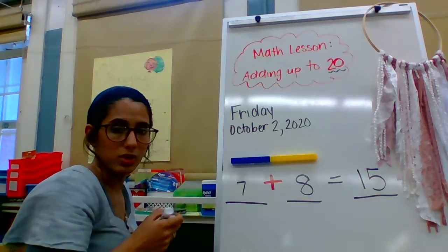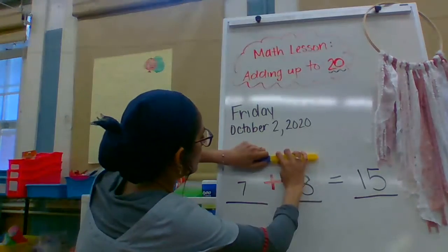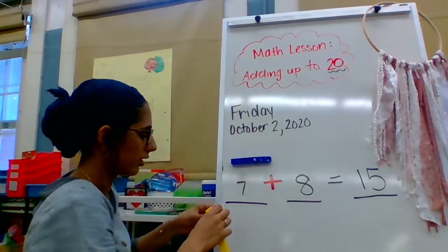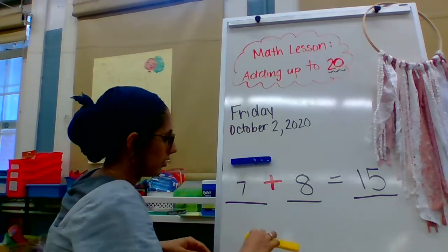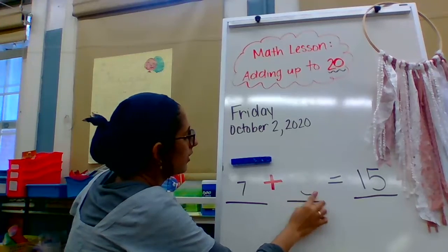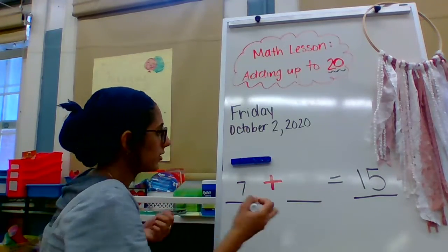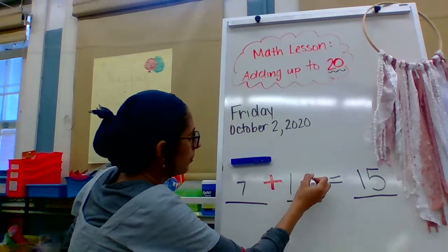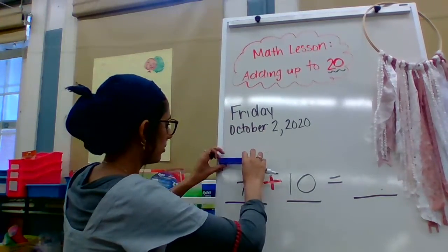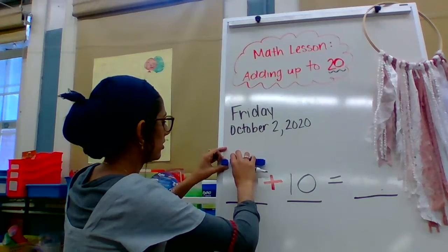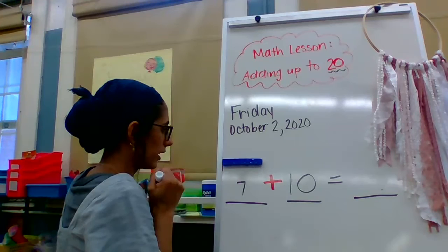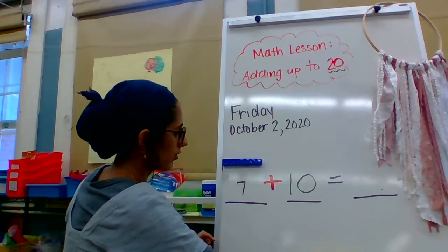All right, let's do another example. So let's say I'm going to leave my seven over here. Okay, I'm going to keep that seven and let's make this a 10. Wow, we're getting big numbers here. All right, so seven, I'm going to move you down here. All right, this is my seven. And now we're going to add 10 counters.